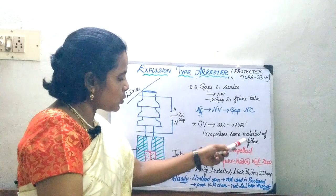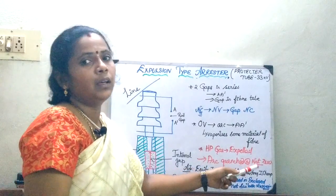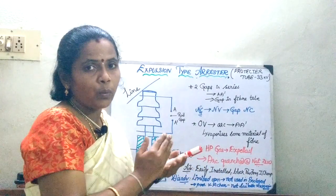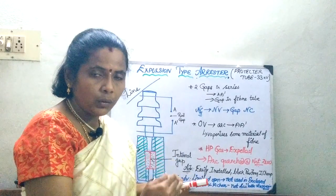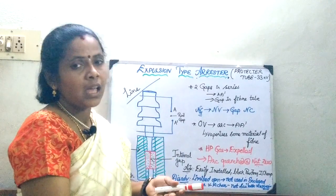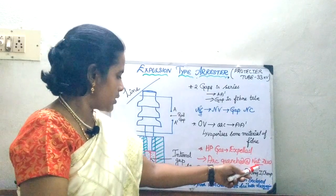Whenever the gas is going to get expelled, at the same time, the arc is going to be quenched at natural zero. So, whenever the arc is going to get quenched at natural zero, the current is not going to repeat again. In that case, the arc is going to get extinguished. So, that is the concept.